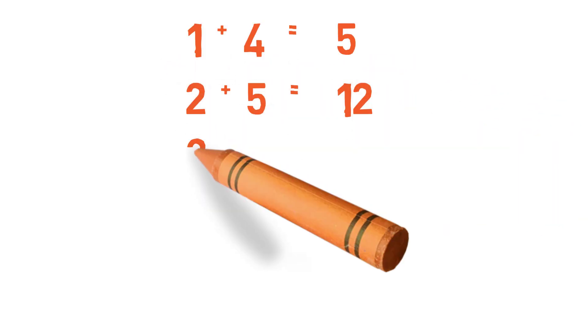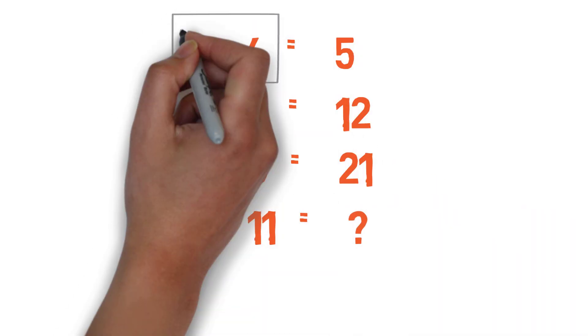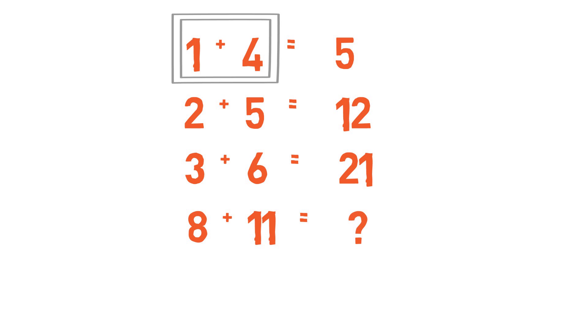Right, now let's see how we can tackle this problem. Let's focus on the first line. I'm sure you can see a pattern and it looks easy. 1 plus 4 is 5. Let's see if this logic applies to the next line. 2 plus 5 is not 12.